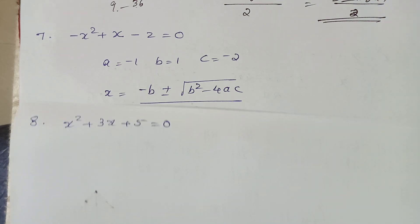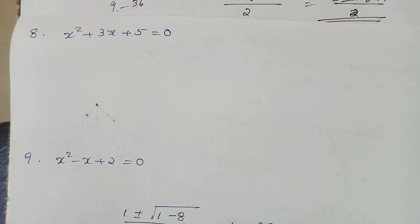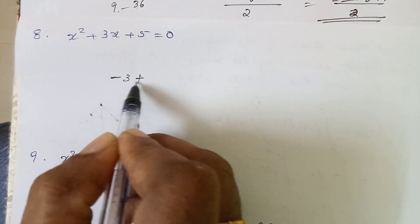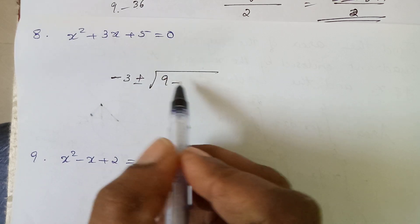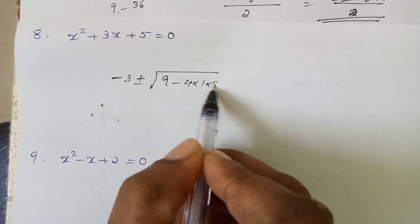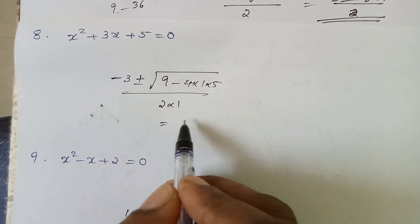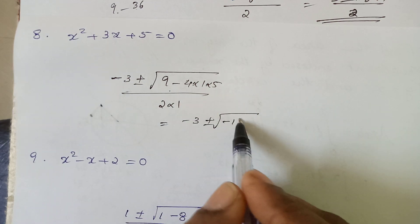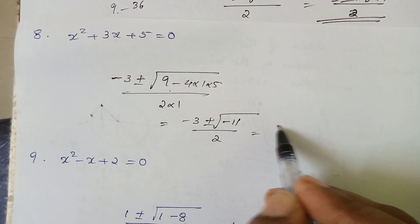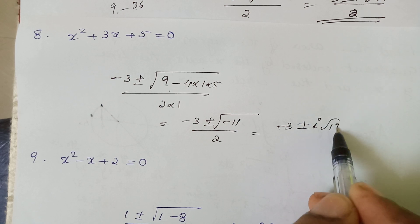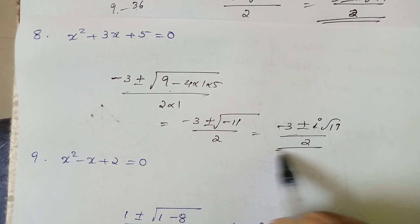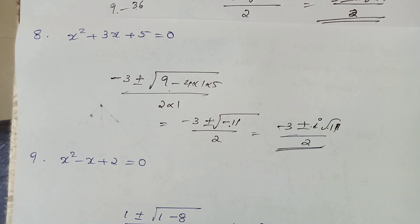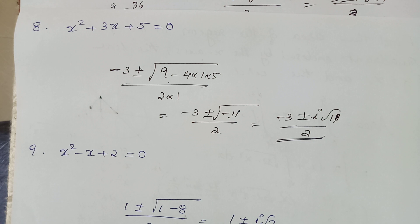Now for x squared plus 3x plus 5 equal to 0, using the quadratic formula: x equals minus b plus or minus root of b squared minus 4 into 1 into 5, divided by 2 into 1. This gives minus i root 11 divided by 2. Next we consider minus x squared minus x minus 2.